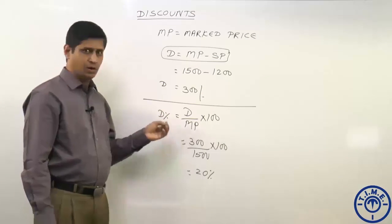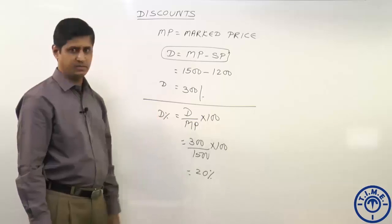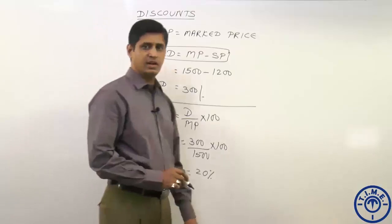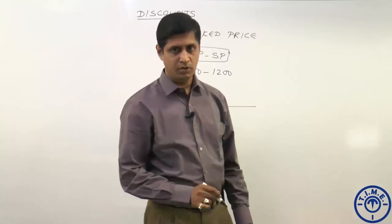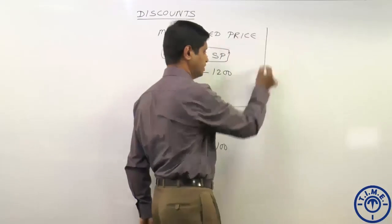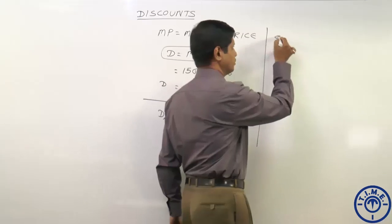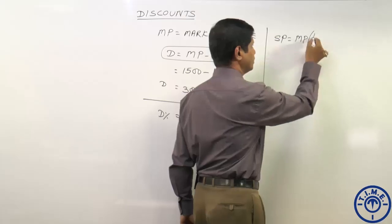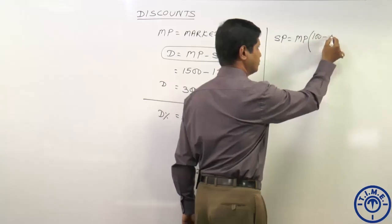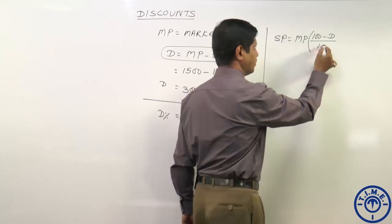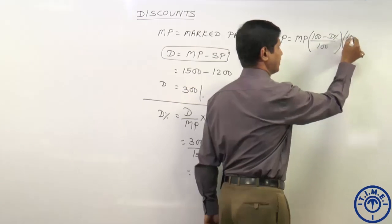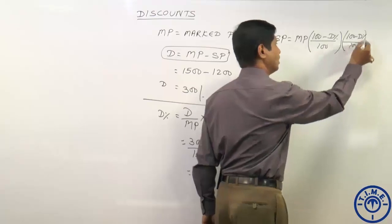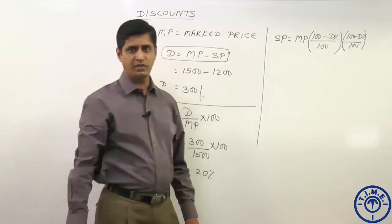If more than one discount is offered on the same marked price, it is called a successive discount. When a successive discount is offered, the selling price is equal to marked price multiplied by (100 minus first discount percentage) divided by 100, then multiplied by (100 minus second discount percentage) divided by 100. If more than two discounts are given, just apply the discounts one after another.